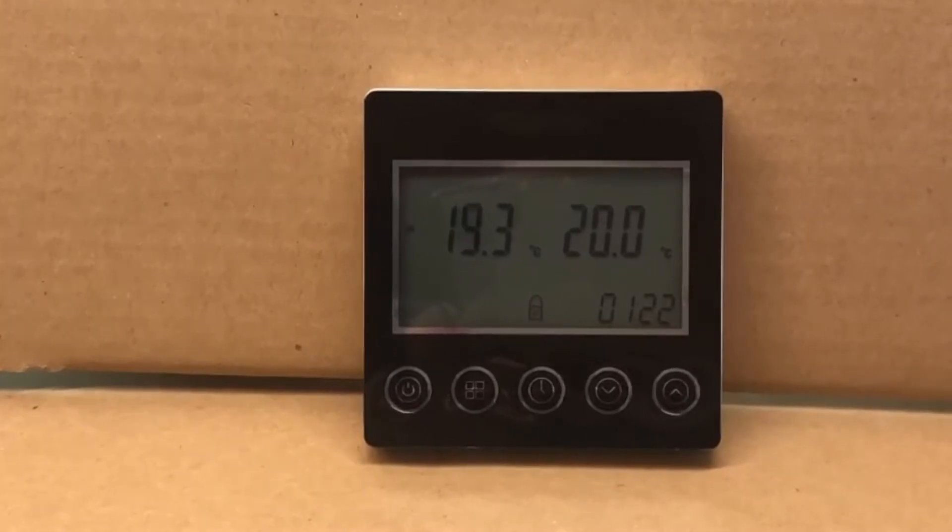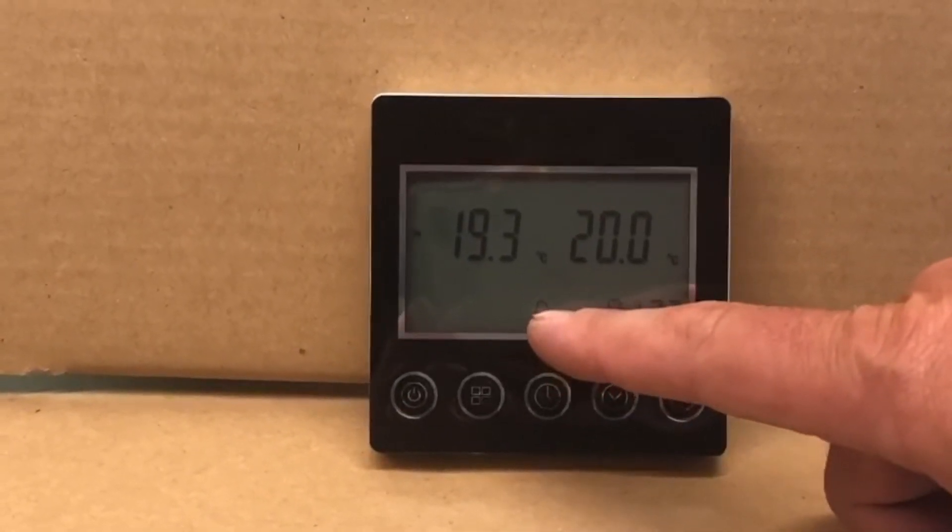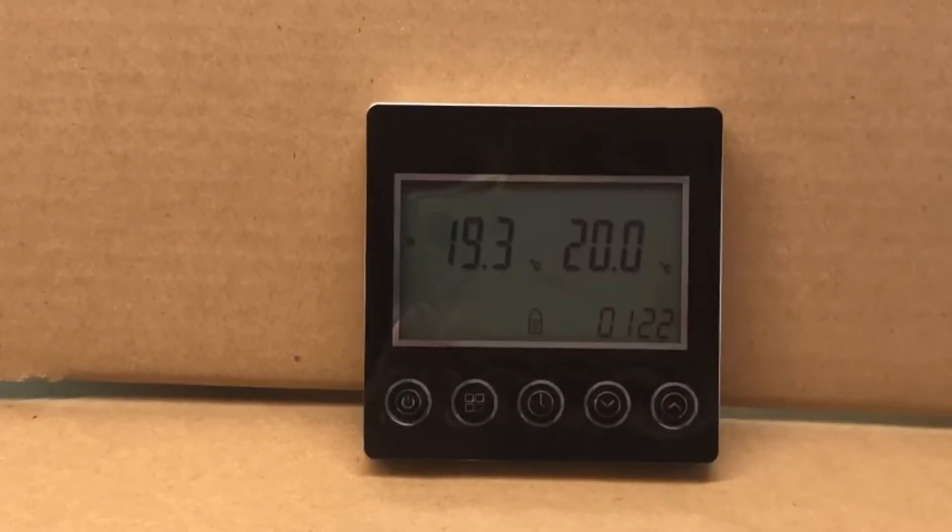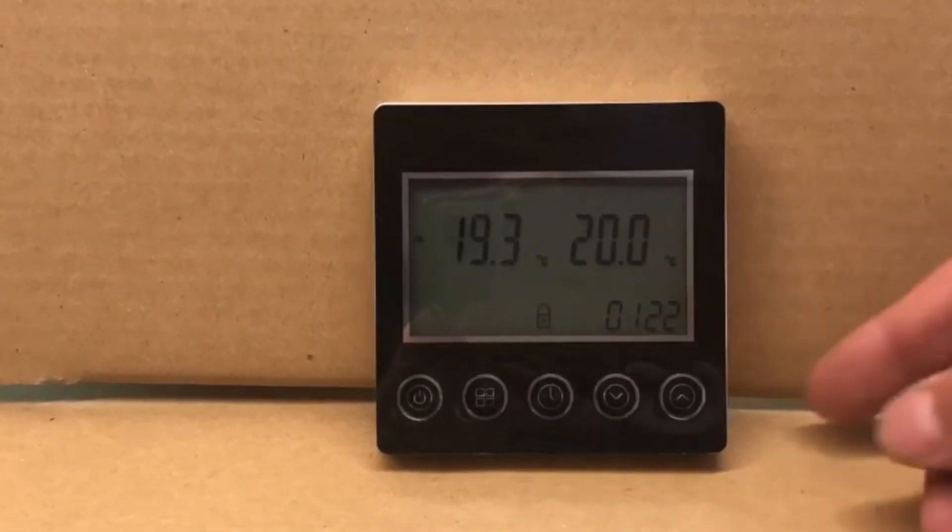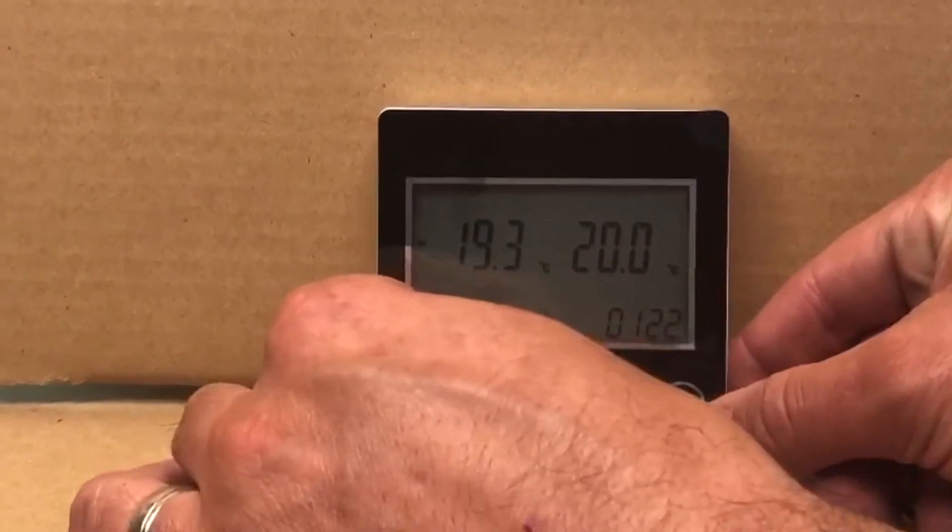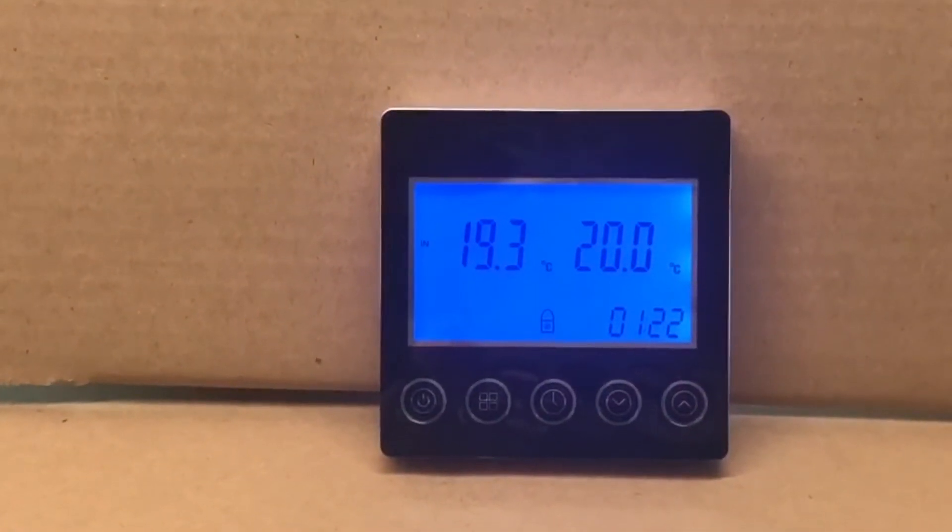The time's incorrect at the moment and we've got a lock button that we can just about see there. The display isn't illuminated, so the first thing we need to do is press one of the buttons so that it illuminates.